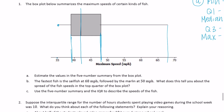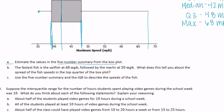Those are your five number summary. Part B: the fastest fish is the sailfish at 68 miles per hour - there's one fish right here that is 68 miles per hour. That's the sailfish, followed by the marlin at 50 miles per hour. So the next fastest is a marlin, and there's a pretty big difference between the fastest and the next one. What does this tell you about the spread in the top quarter of the box plot?